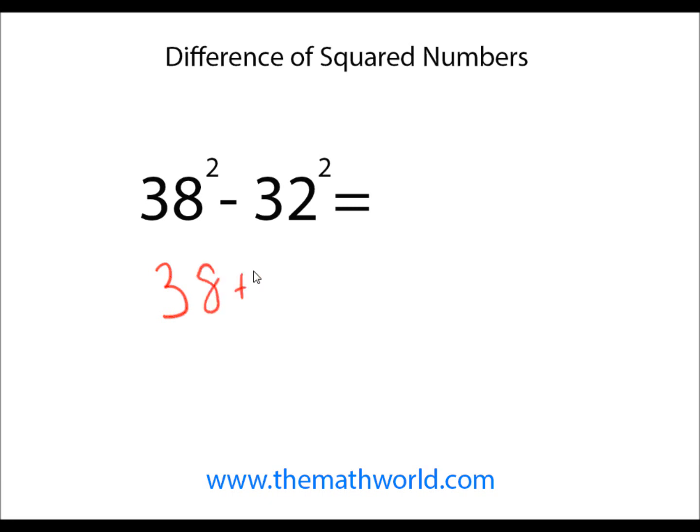We have 38 plus 32, that equals 70, and then you're going to subtract these numbers. So 38 minus 32 is 6.